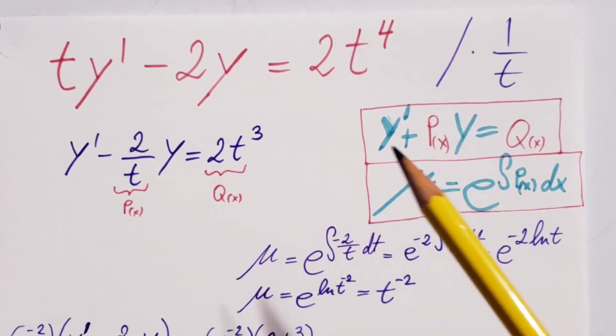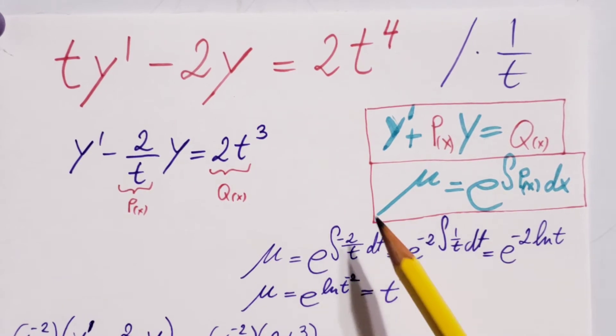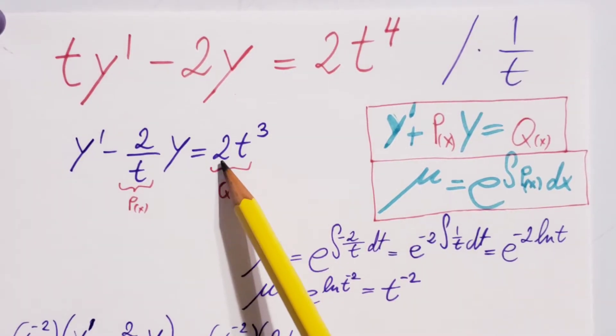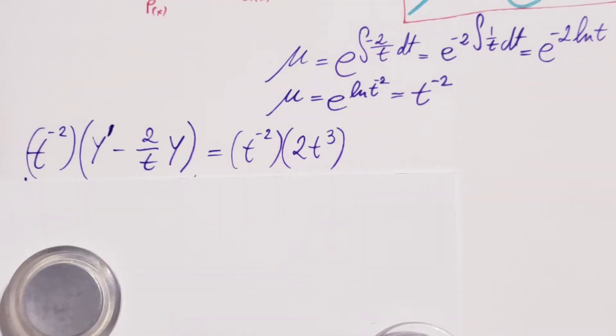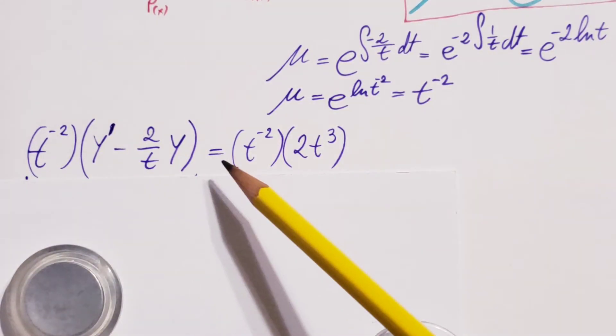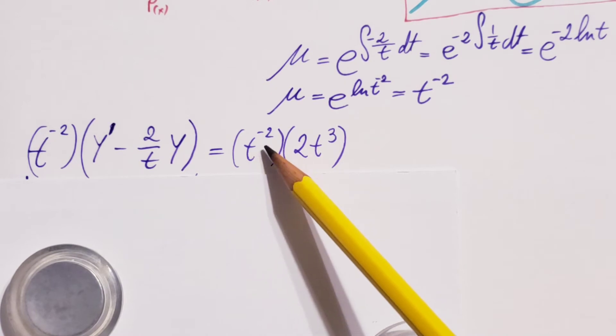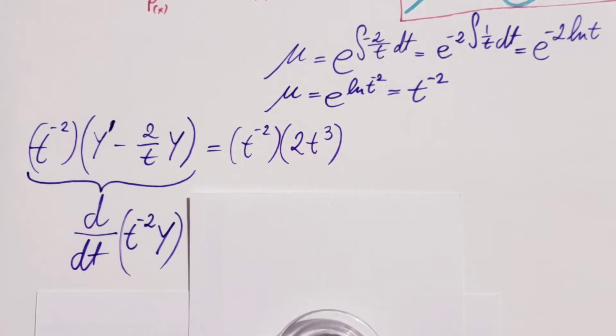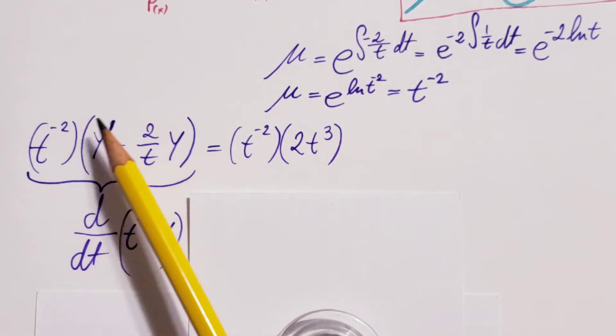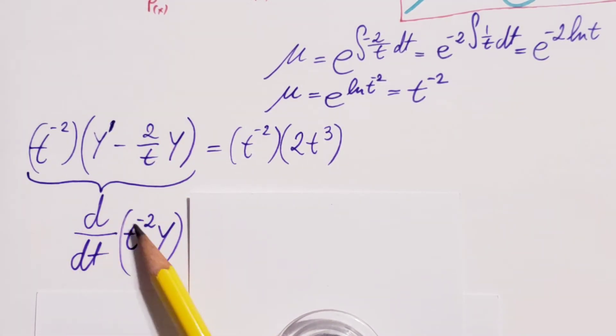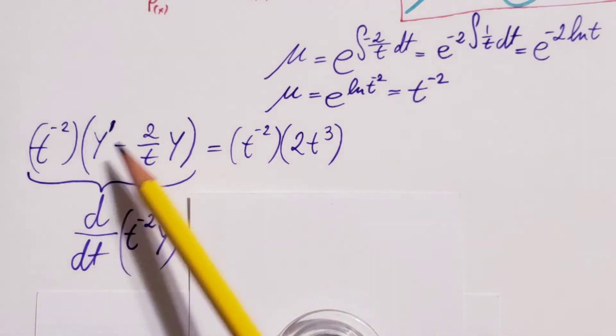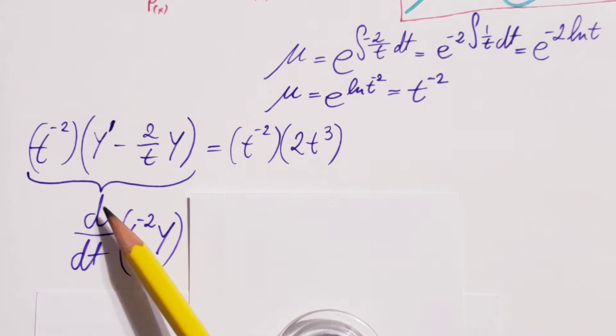Now, the next step is I'm going to take my integrating factor and multiply my equation, both sides. That's what you can see right here. Multiply the left-hand side, multiply the right-hand side. Now, in the next step, this part will turn into this. This is the easy step of the integrating factor method because all this stuff will simply turn into this right here. The derivative of d/dt, t to the negative 2, y.